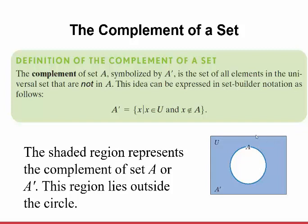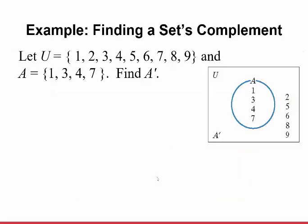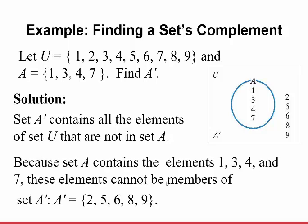Anything not in A is the complement of A. For example, let U equal the universal set as numbers 1, 2, 3, 4, 5, 6, 7, 8, 9, and set A is numbers 1, 3, 4, and 7. We find A complement — the set of elements outside A — which is 2, 5, 6, 8, and 9. Because set A contains elements 1, 3, 4, and 7, those cannot be members of the complement. So A complement is 2, 5, 6, 8, and 9.